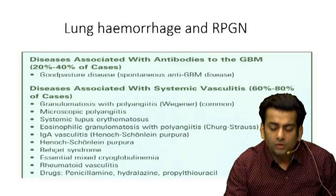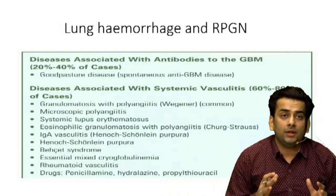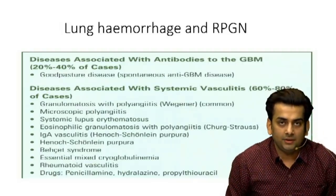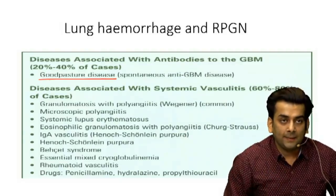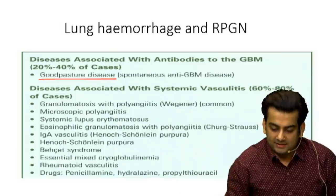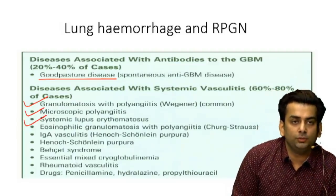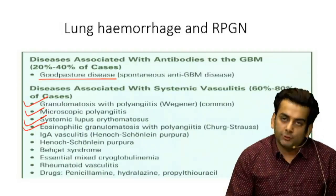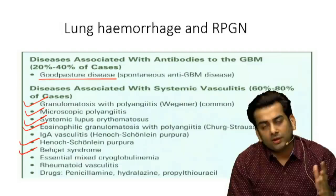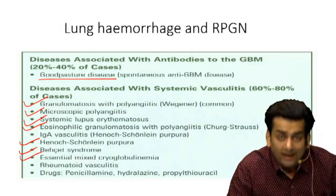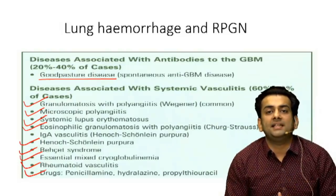The immune causes of pulmonary renal syndrome almost always lead to diffuse alveolar hemorrhage in the lung and RPGN in the kidney. These are classified into diseases with anti-GBM antibody, i.e., Goodpasture's disease, and diseases associated with systemic vasculitis: granulomatosis with polyangiitis, microscopic polyangiitis, systemic lupus erythematosus, eosinophilic granulomatosis with polyangiitis (formerly Churg-Strauss), Henoch-Schönlein purpura, Behçet's syndrome, essential mixed cryoglobulinemia, and other vasculitides like RA or drug-induced vasculitis.